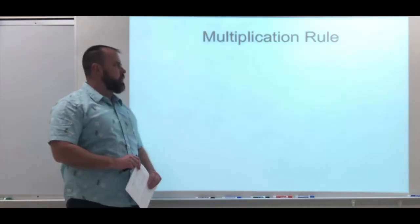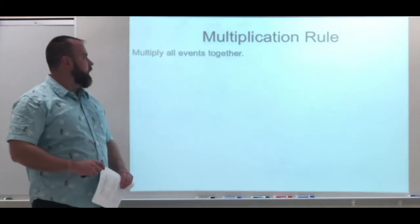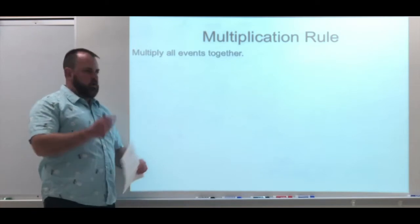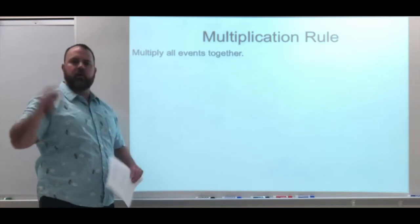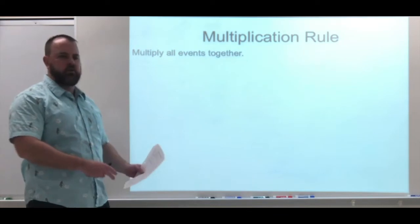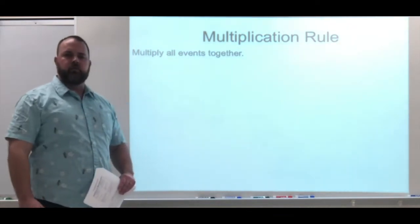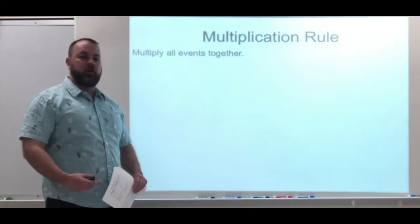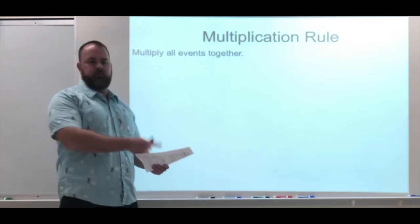So here we have the multiplication rule, and when multiplying all the events together, you're just going to line them up, multiply right across, so you have your probability set up, and multiply across. Multiple events are going to happen, so I can't tell you how many, it might be two, three, four.